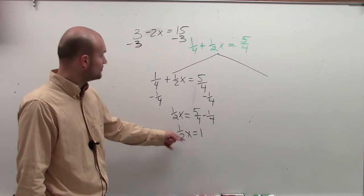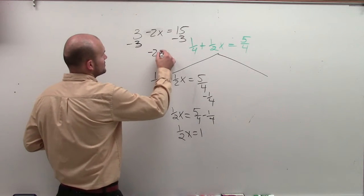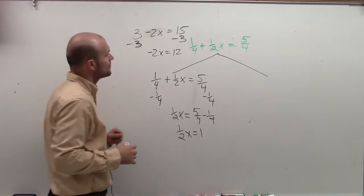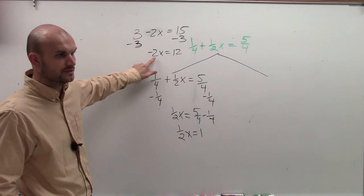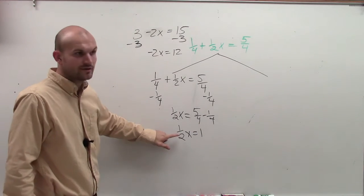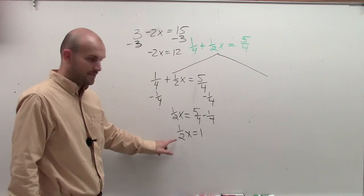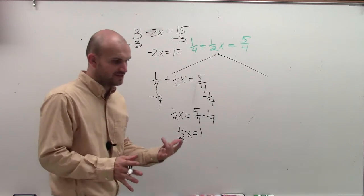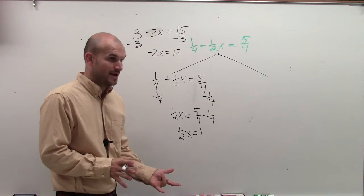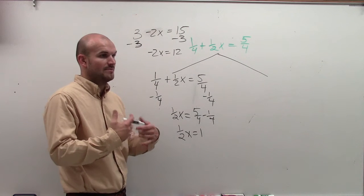Now what I need to do is look at my x. So here, now you'd have negative 2x equals 12, right? So now what do you do with this? Divide by negative 2, right? So what do you think you'd have to do here? Divide by 1/2. Now instead of, a lot of times when we talk about dividing, instead of dividing by 1/2, we could say you could multiply by what?